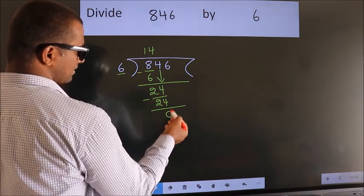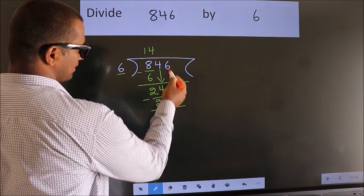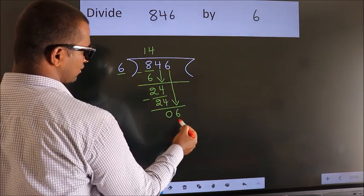After this, bring down the beside number. So 6 down. So 6.